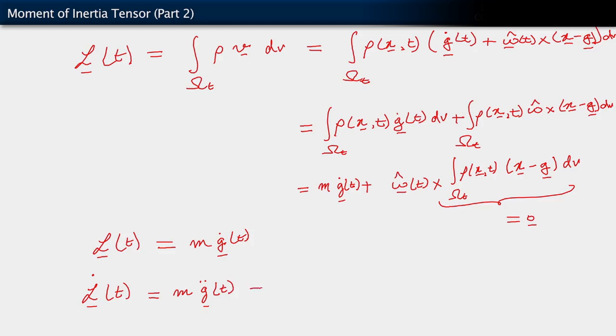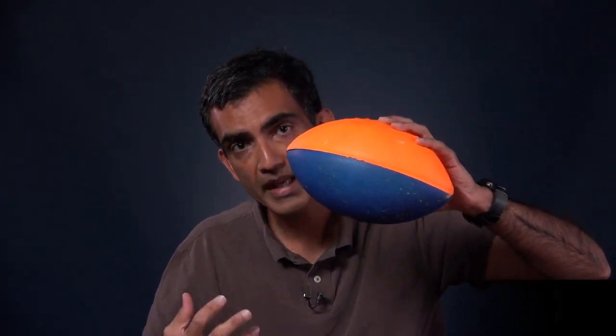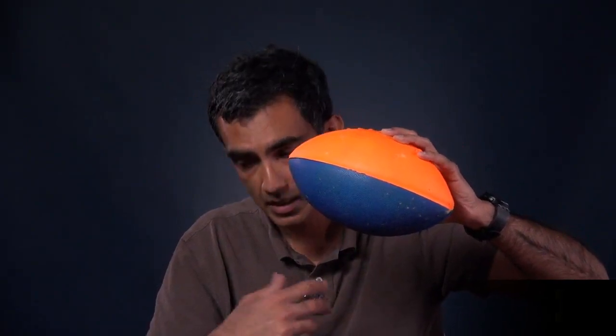This is of course going to be equal to the total force on the body. So what this says is that for this body undergoing rigid motion, even the rate of change of linear momentum of the body — which does not account for tumbling motions — is simply the rate of change of linear momentum of the whole body acting like it was a particle at the center of mass.